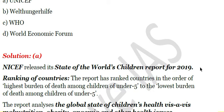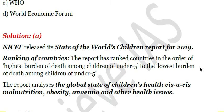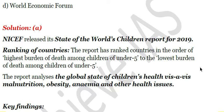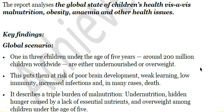Different countries have been ranked in the report in the order of highest burden of death among children under five to the lowest burden. Death or mortality happens due to multiple factors including lack of quality food, deficiency of micronutrients, disease, or lack of sanitation and health. The report analyzes the global state of children's health vis-à-vis malnutrition, obesity, anemia, and other health issues.